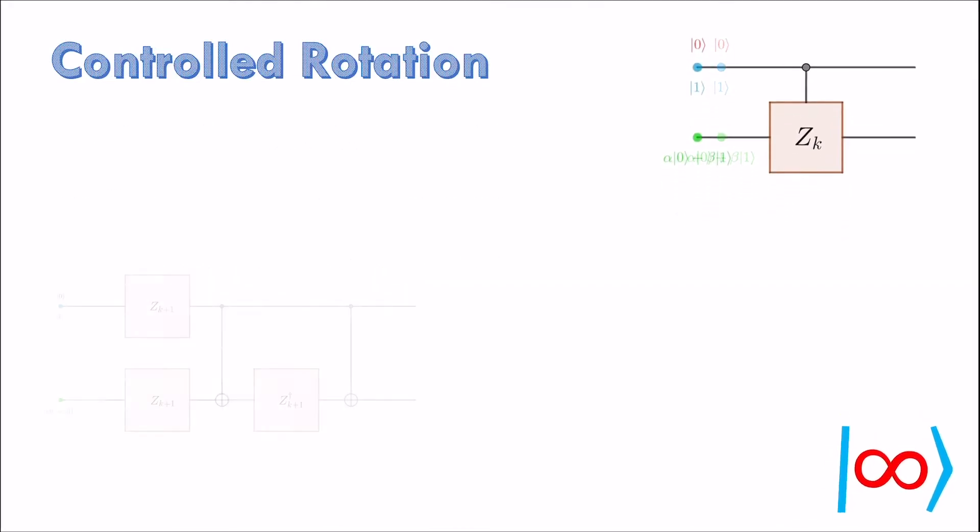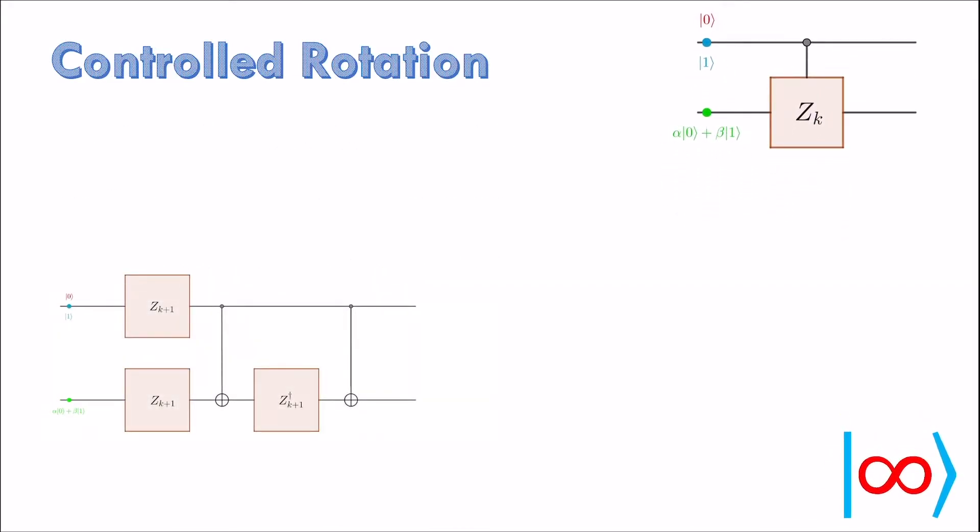In the case of rotation by Z_k, all we need is 2 CNOT gates and Z_k+1 gate and its inverse to implement the controlled version of Z_k rotation. Notice that Z_k+1 gate rotates by an angle which is half of what Z_k does. The inverse gate is simply rotation in the opposite direction.